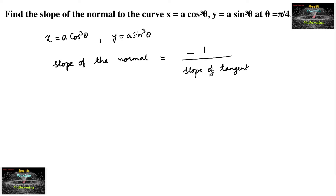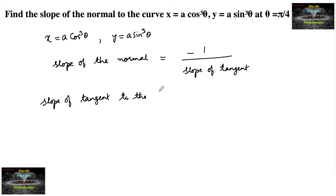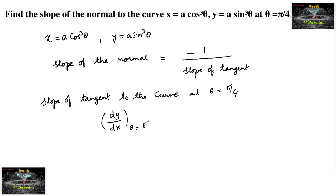So let's find the slope of the tangent at theta equal to pi by 4. The slope of the tangent to the curve at theta equal to pi by 4 — let us find that, which is dy by dx at theta equal to pi by 4.